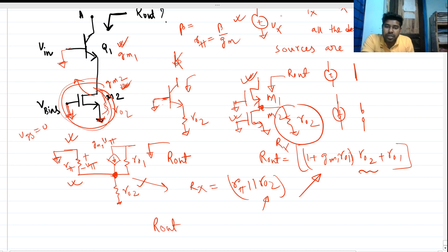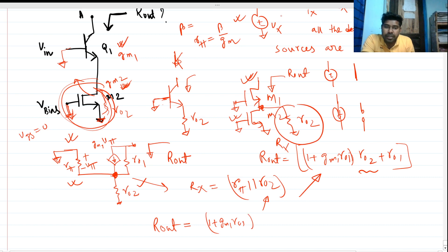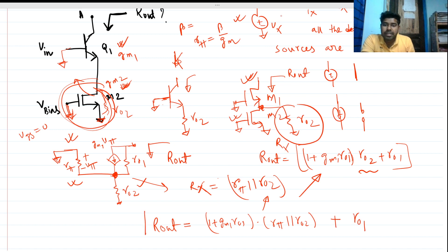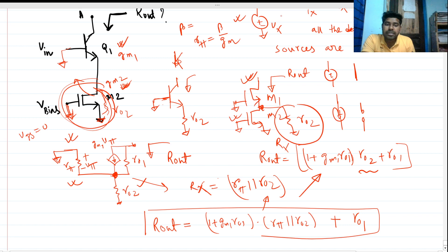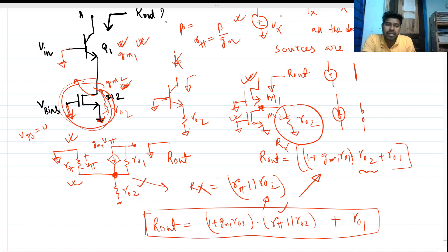If we write the output impedance expression for this given question, it will be nothing but R1 plus gm1·ro1 times R_x, where R_x is r_pi in parallel with ro2, plus ro1. This is our final expression. This is a very good question because it tests your knowledge of the beta factor with the BJT.